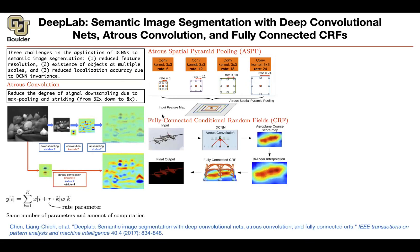To take care of reduced localization accuracy due to convolutional neural network invariances, you can do a post-processing step. This is after training is done, when you want to do inference and predictions, and you're going to use a fully connected conditional random field (CRF). Taking the big picture: you have an input image, you do your atrous convolutions, you end up with a coarse score map, you can do bilinear interpolation to go back to the original scale of your image, and this is when the CRF is going to come in to help you identify the objects.